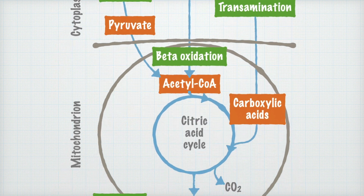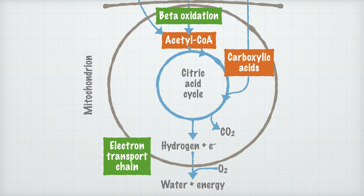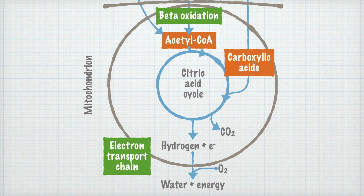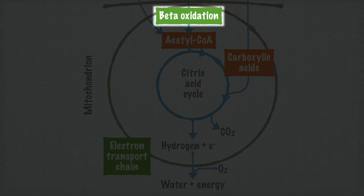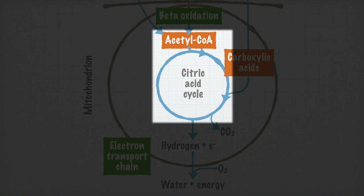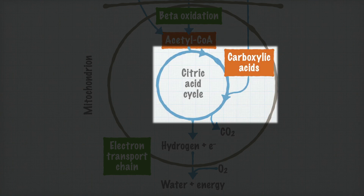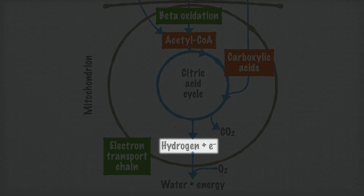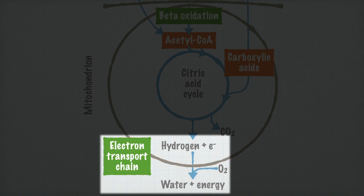From the cytoplasm, we now move into the mitochondrion. The pyruvate that was formed in the glycolysis is oxidized into a molecule called acetyl-CoA. In another process in the mitochondrion, so-called beta-oxidation, fatty acids are also broken down into acetyl-CoA. Acetyl-CoA may enter the citric acid cycle, where it is oxidized to carbon dioxide. Some carboxylic acids from the deamination processes may also go directly into the citric acid cycle. In the citric acid cycle, quite a lot of hydrogen and high-energy electrons are released. In the so-called electron transport chain, they are used to form water together with the oxygen that we breathe in. In this process, energy is released — energy that the mitochondrion stores in ATP molecules.